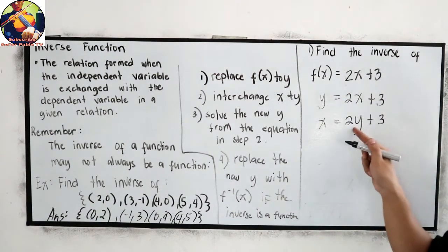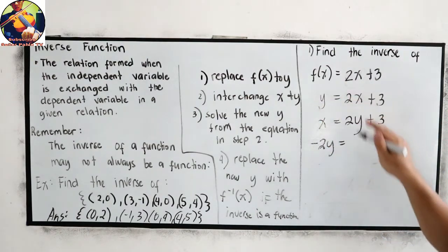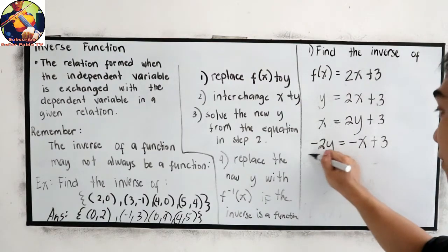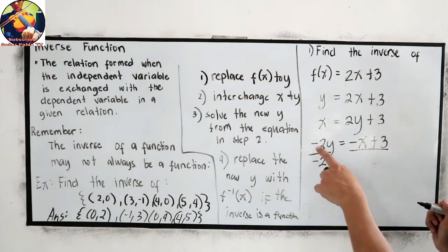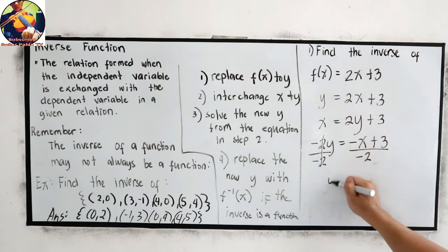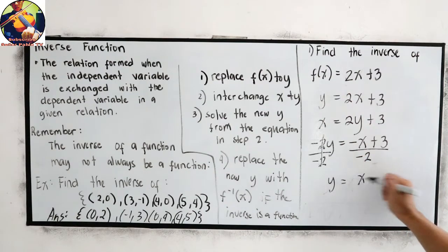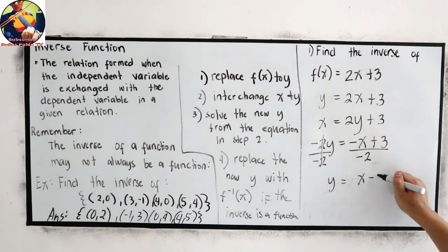Now, solve for y. Transpose: -2y = -x + 3. Now, solve for y. Divide by -2 to eliminate our numerical coefficient. So y = negative divided by negative, that will become x. Then positive divided by negative, minus 3 all over 2.